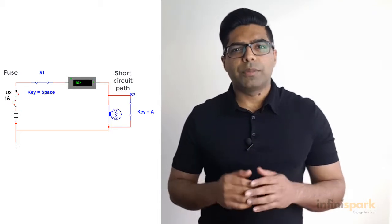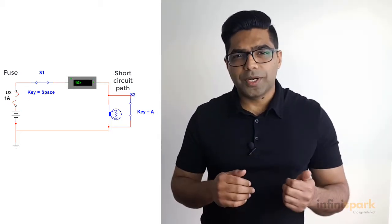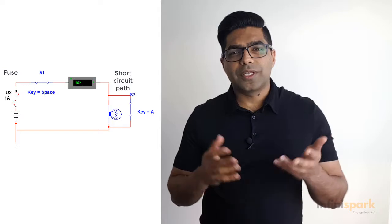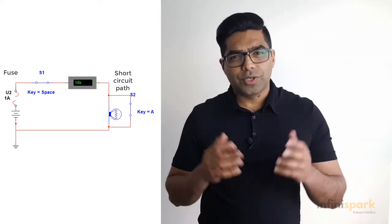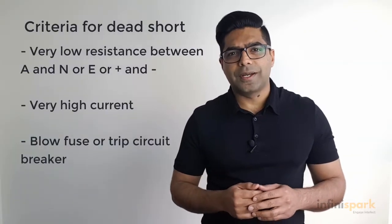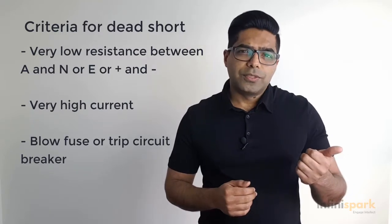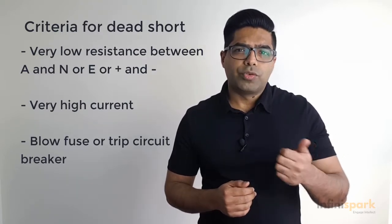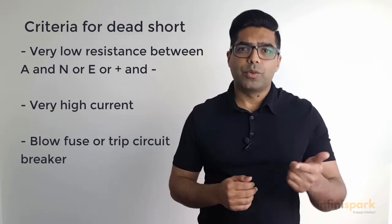The most likely outcome of this situation is a tripped circuit breaker or a melted wire because the current is too high. So the criteria for a dead short fault are: very low resistance between live conductor and neutral or earthing conductor, very high current which causes a circuit protection device to operate.